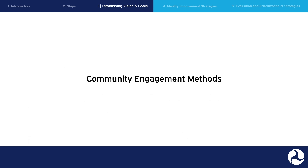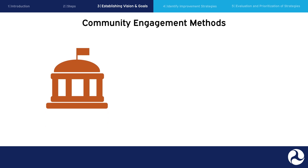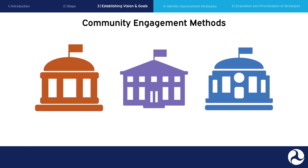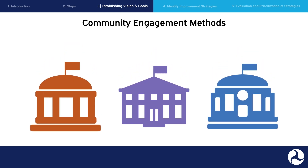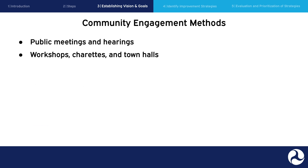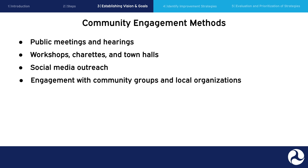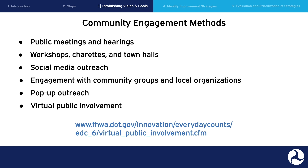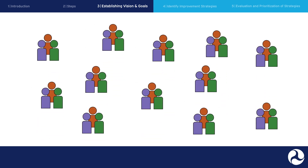When establishing your vision and goals, community engagement is key. Your organization should conduct outreach across communities in your areas, ensuring that all voices are heard. There are many engagement methods, including public meetings and hearings, workshops, charrettes, and town halls, social media outreach, engagement with community groups and local organizations, pop-up outreach, and virtual public involvement. For more information on FHWA's virtual public involvement initiative, see the FHWA's VPI website. These are just a few of the methods that can be used, and an effective community engagement strategy should employ multiple methods.